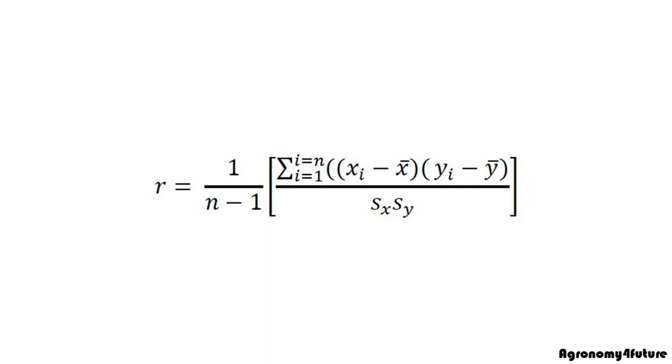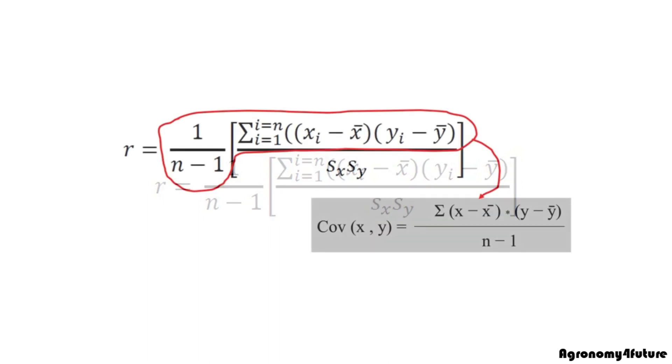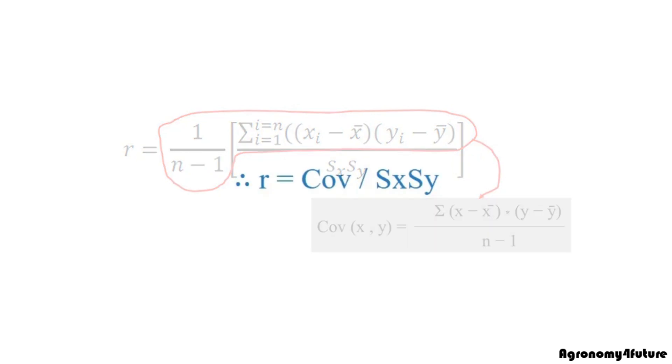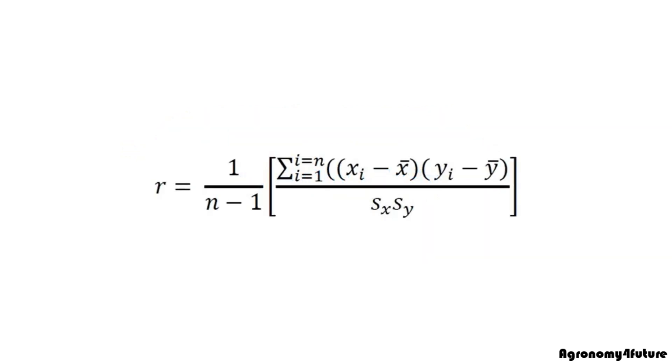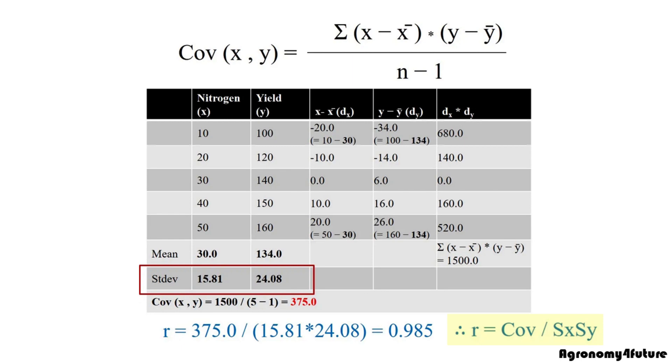You saw this equation before. Numerator is the equation of covariance. Denominator is multiplication between standard deviation x and y. That's why I told only difference between correlation and covariance is the ratio of standard deviation of x and y. Therefore, simply we can express correlation like this. Just forget this equation. Simply we can say, correlation is covariance divided by multiplying standard deviation x and y.